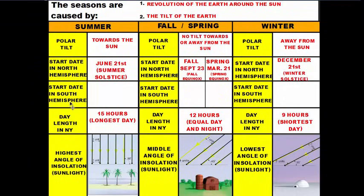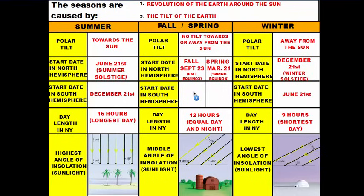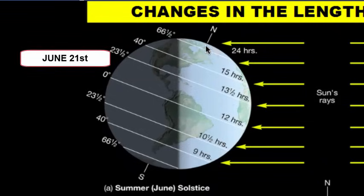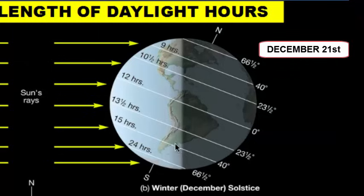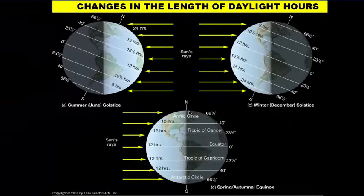When we talk about season start dates we usually refer to the Northern Hemisphere. The Southern Hemisphere is always the opposite: summer starts December 21st, winter starts June 21st, their fall equinox is March 21st, and their spring equinox is September 23rd. The reason is that when we're tilted towards the Sun on June 21st and in summer, the Southern Hemisphere is tilted away and in winter. On December 21st when we're in winter, the South Pole is tilted towards the Sun so they're experiencing summer.